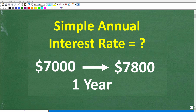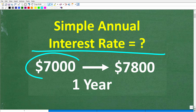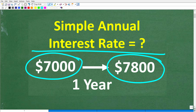If you have basic money math skills, this should be a pretty easy question to answer. What we're looking for is the simple annual interest rate needed to grow a $7,000 investment to $7,800 in one year. Feel free to use a calculator, but if you can figure this out, go ahead and put your answer into the comment section. I'll show you the correct answer in just one second, then walk through step-by-step how to solve this problem.